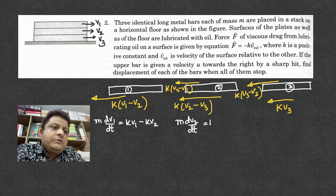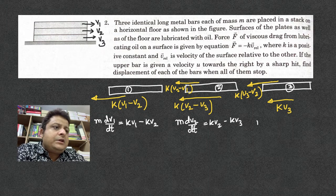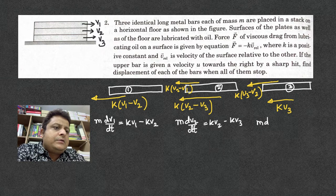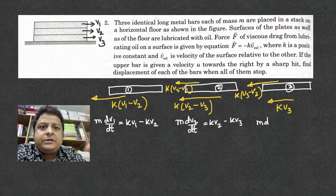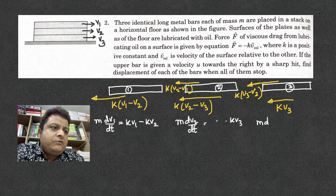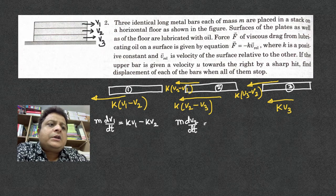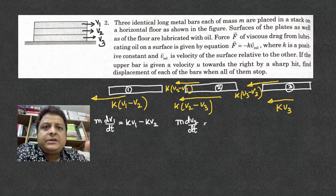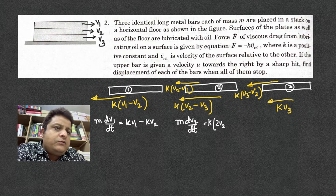Sorry, I have missed out some terms. There are more terms. What is the net force? So it's k times 2v2 - v1 - v3. So it is k into 2v2 - v1 - v3.